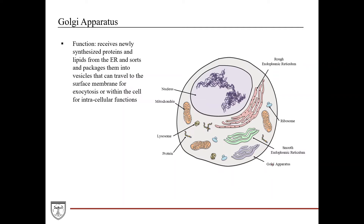The Golgi apparatus has this stacked pancake look to it, which we'll also show on the EM slide. It's usually adjacent to the rough endoplasmic reticulum because it receives newly synthesized proteins from the ER — both rough ER and smooth ER. It's almost like a FedEx or UPS center: it receives packages, processes them, and sends them out. It sorts and packages different lipids and proteins into vesicles that can either travel to the surface of the cell and fuse with the membrane to be excreted or embedded, or travel within the cell for intracellular functions.